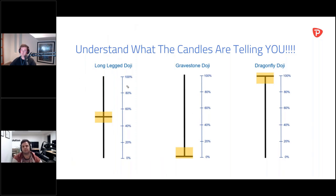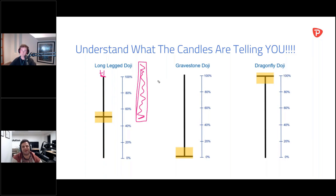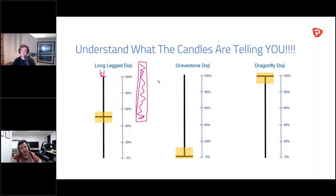Context is everything. An indecision candle in the middle of nowhere doesn't mean much. But at a resistance point, a support zone, or a reload zone like a 20 moving average, it's extraordinarily important — it means the market has paused there. Buyers and sellers are considering where it's going next with no avail. The next candle is crucial, and that's what makes it far more powerful. If a bullish candle then closes above the high of that doji, the decision's been made.